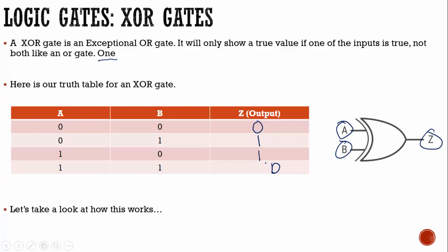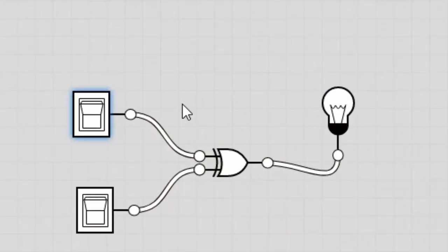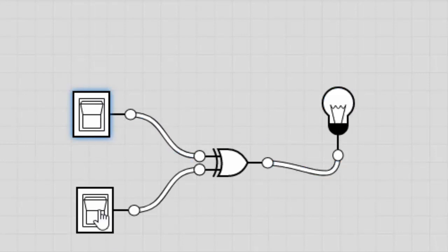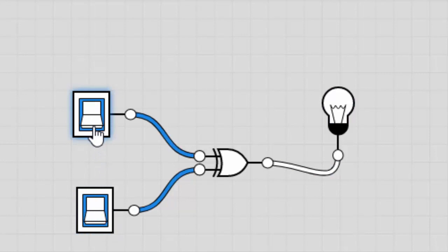We have four instances to work with: both are off; A is on and B is off; B is on and A is off; and both are on. When both are off it's not lighting up. If I turn A on only, it will light up. If I turn just B on, it lights up. When I turn both on, it should not light up — and we can see that it's not lighting up. That's how an exclusive OR gate is different from an OR gate: a regular OR gate allows both switches to be on resulting in a one, but with an XOR gate it can only be one or the other — it cannot be both.